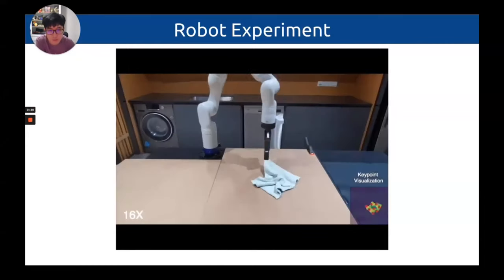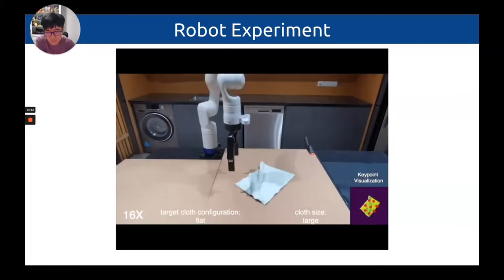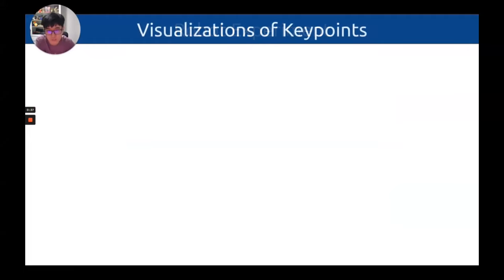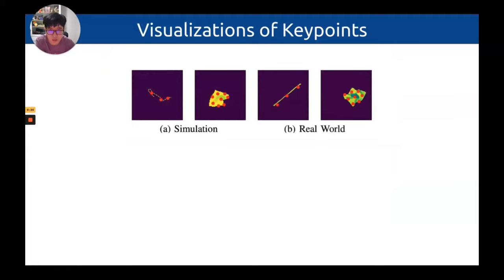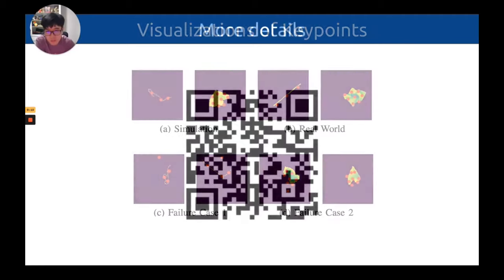It is also able to flatten a piece of cloth with only four steps of actions. Here are some additional visualizations of the detected keypoints, which are visually salient on both simulation images and real-world images. However, there are some failure cases: the number of keypoints must be carefully chosen, it may be noisy given extreme deformation, and inaccurate detections introduce additional noise to the model. But with contrastive learning the learned dynamic model is still robust.